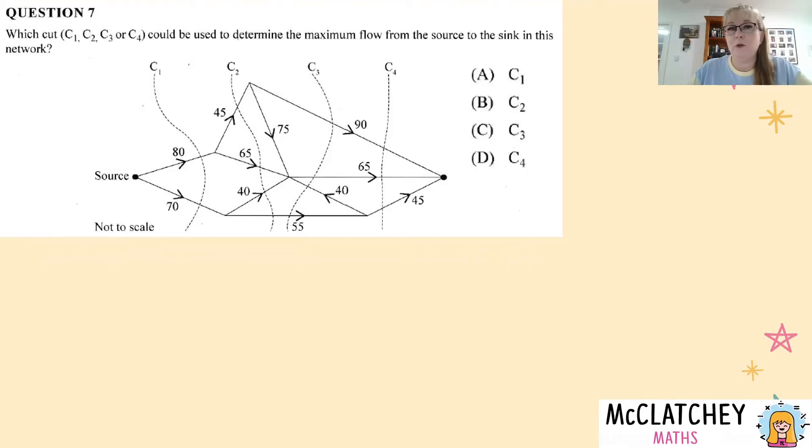Our first multiple choice question was question seven. Which cut, cut one, two, three or four could be used to determine the maximum flow from the source to the sink in this network? Have a quick look. You can see the source on the left hand side and on the right hand side you've got your sink. It's not actually labelled in this question but it's on the other side. And we've got four options of the four cuts.